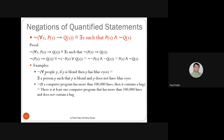For example: 'for all people P, if P is blonde then P has blue eyes' — its negation is 'there exists a person P such that P is blonde and P does not have blue eyes.' Similarly, 'for all programs, if a program has more than 100,000 lines then it contains a bug' negates to 'there exists a program with more than 100,000 lines that doesn't contain a bug.'